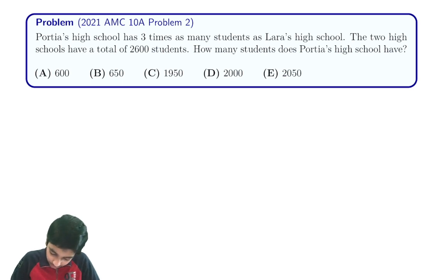So let's say that Laura's High School has x students. Then Portia's High School will have 3x students.